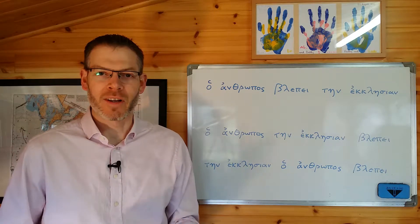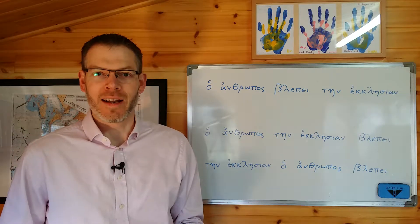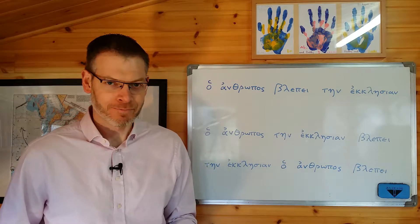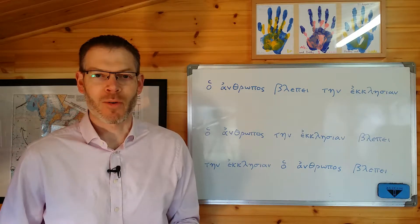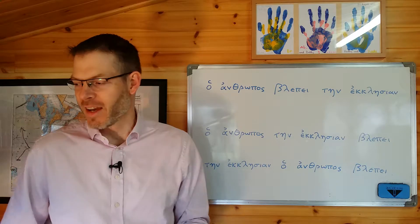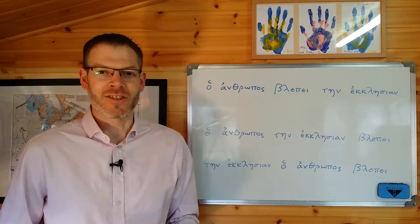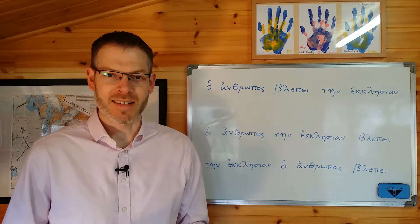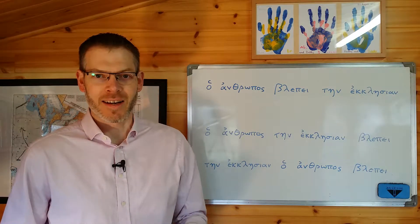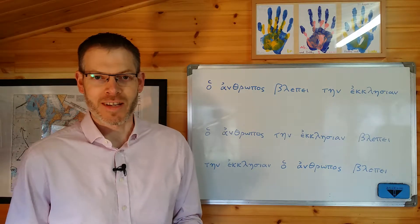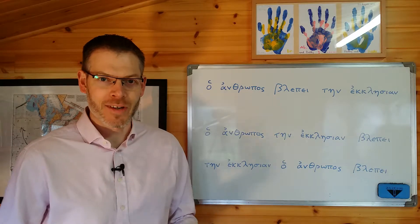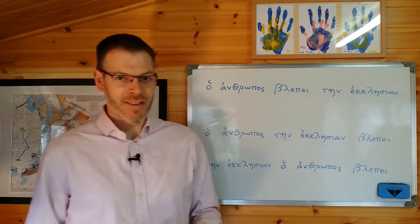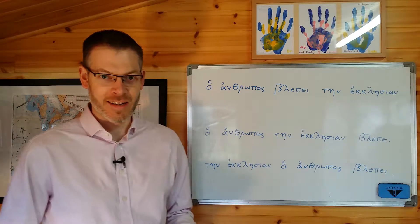Hi everybody, welcome back. We're looking at Jeremy Duff's Elements of New Testament Greek, getting towards the end of chapter three. Today I want to pick up a question that somebody's asked, which is not explicitly mentioned in chapter three, but is an interesting question because it's the kind of question that people start to ask at this point in a course of Greek study. It concerns the issue of word order in Greek sentences.